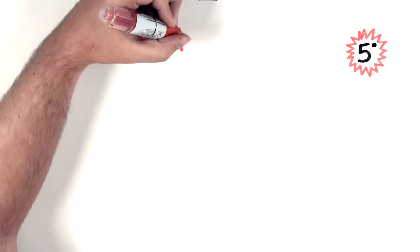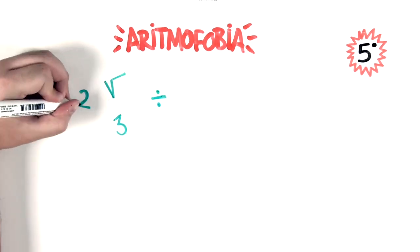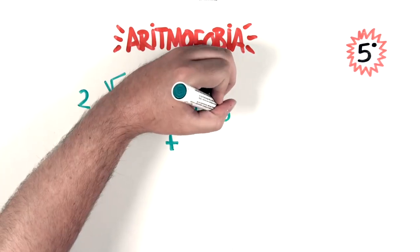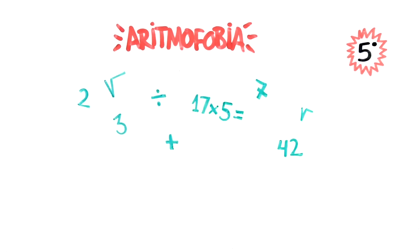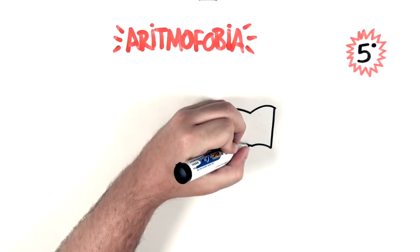In number five, we have arithmophobia. It is the fear caused by calculations, mathematicians, or numbers. People who suffer from it feel an anguish and fear at any stimulus that involves a subtraction or multiplication sum. It affects them in the academic and work environment.